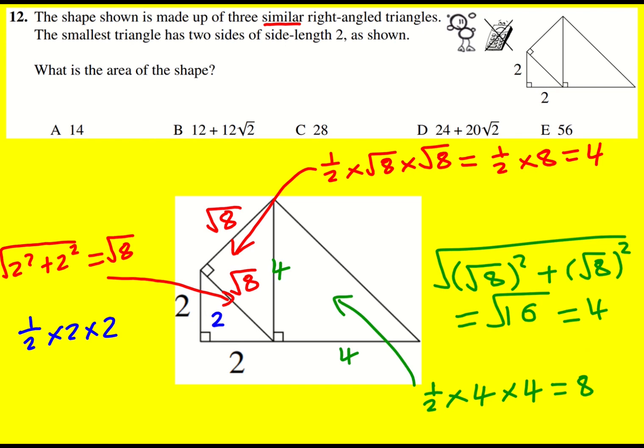We could have used area scale factor if you know about that in theory because this length is double this length, the area will be four times as much. That could have also got us 8 but it doesn't really save that much time.